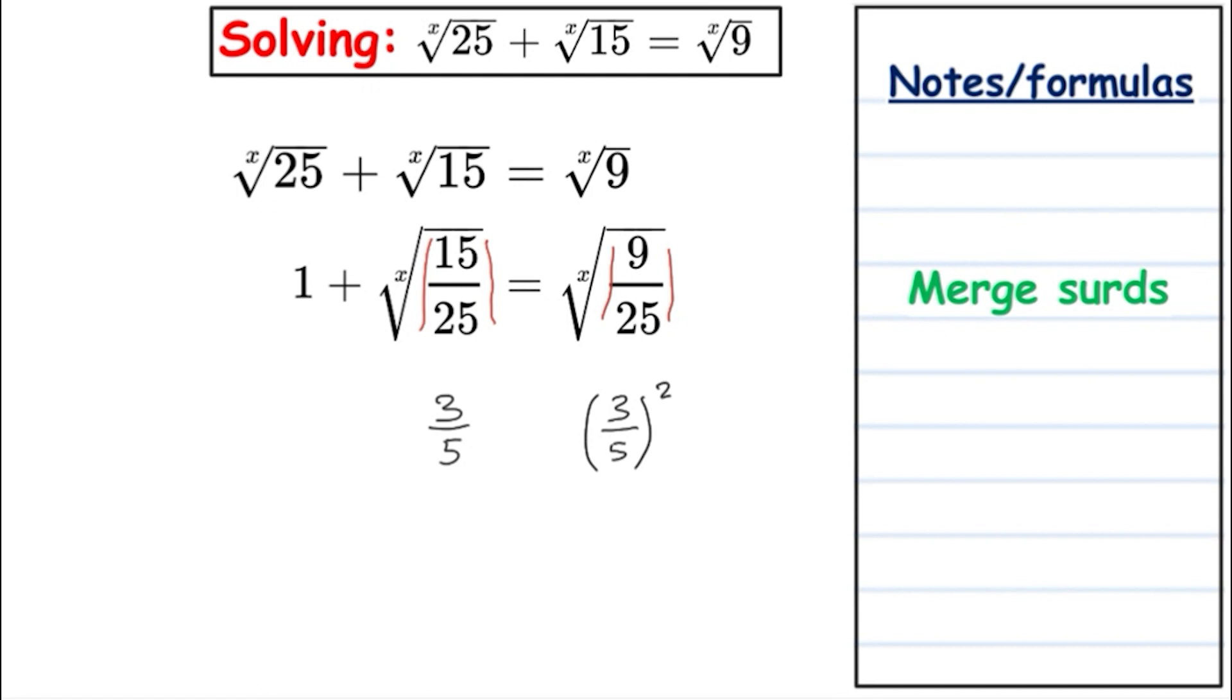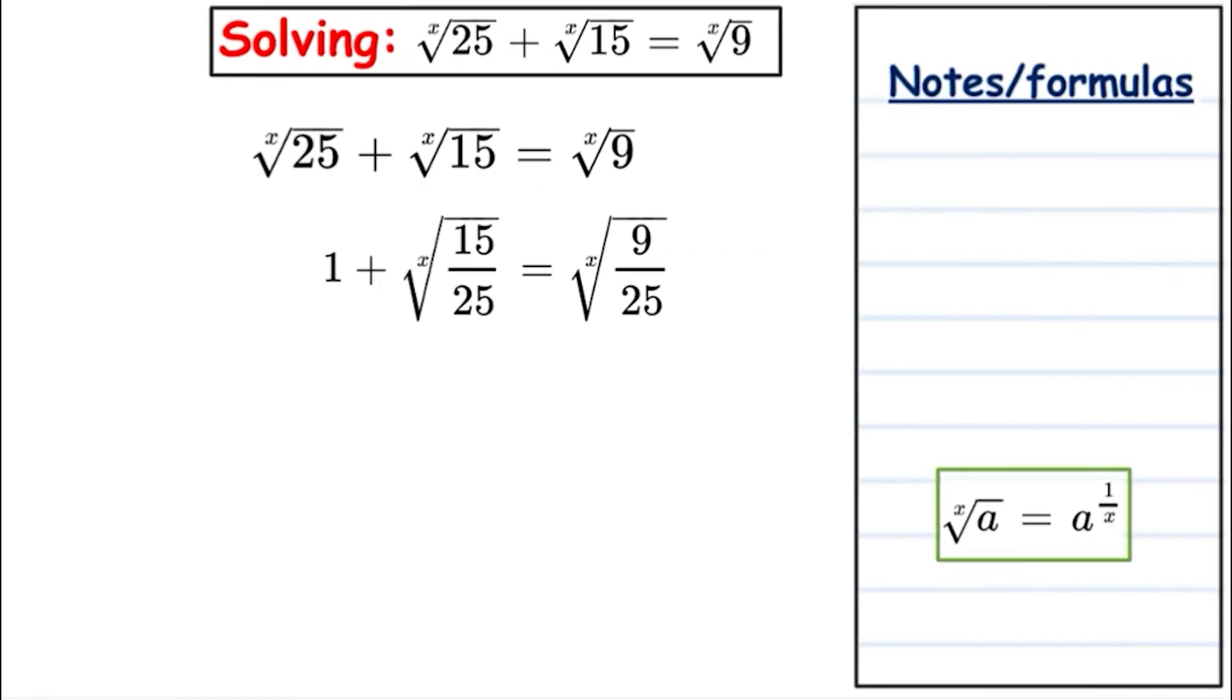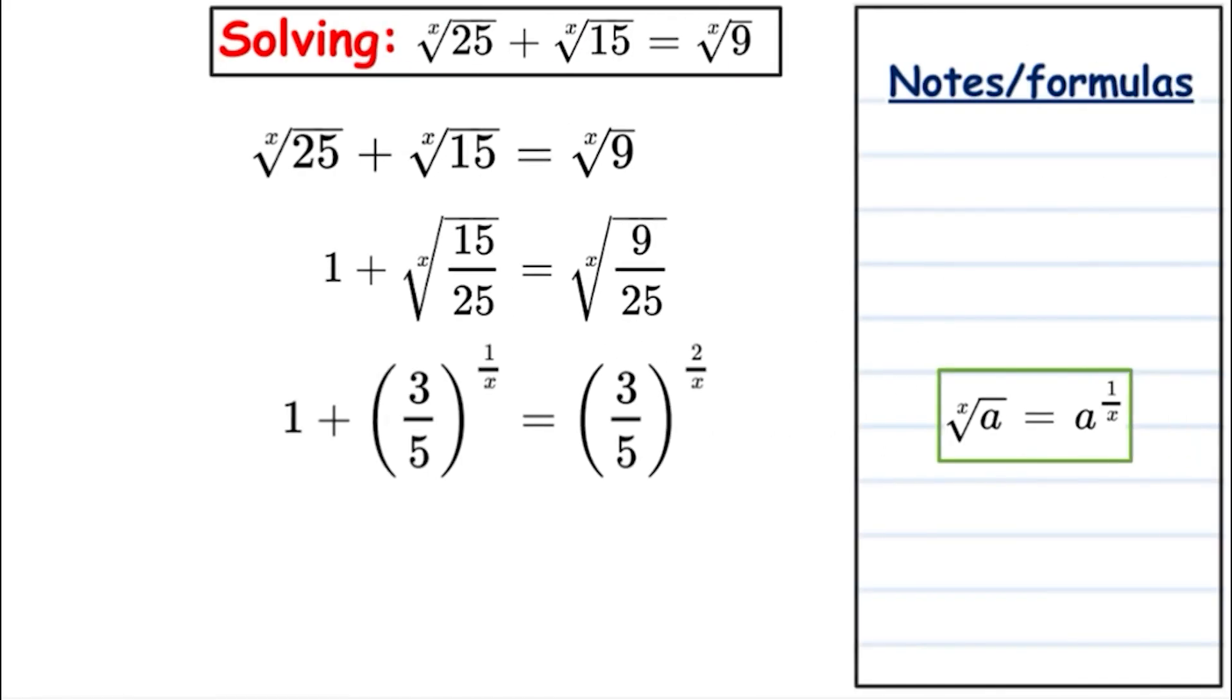Now we can see there is a pattern emerging. Our next step will be to tidy up the square root or the x root. We can apply a power of 1 over x, because that is the x root. Let's bring it out and we're going to have 3 over 5 to the power of 1 over x, replacing the second term. And again 3 over 5, and now we have a 2 as the numerator as it's squared.